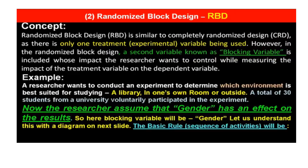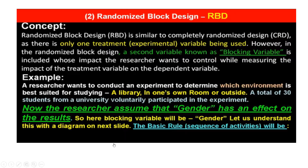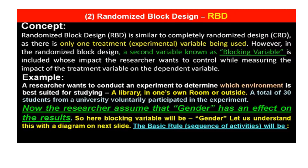For example, a researcher wants to conduct an experiment to determine which environment is best suited for studying — a library, one's own room, or outside. A total of 30 students from a university voluntarily participated in the experiment. The researcher assumed that gender has no effect on the results, so here the blocking variable will be gender.